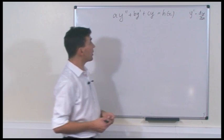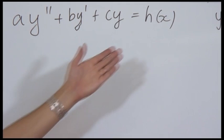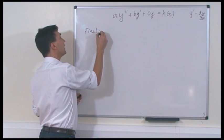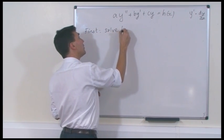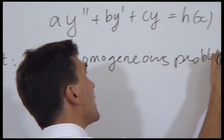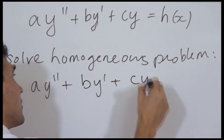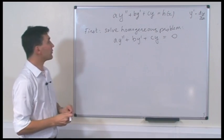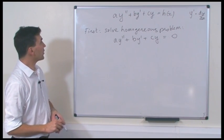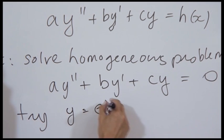How we solve this problem goes in two steps. The first step is to remove H of X and solve the homogeneous problem. So the first stage: we solve the homogeneous problem, which is A times Y double prime plus B times Y prime plus C times Y equals 0. We solve that problem by trying Y equals E to the lambda X.